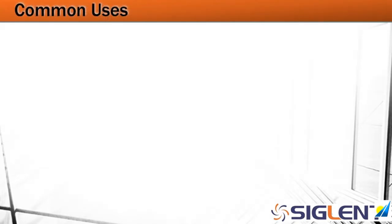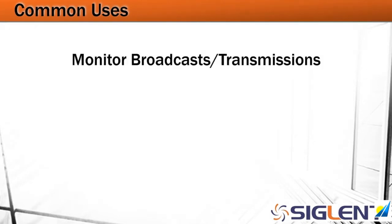Some common uses for a spectrum analyzer include monitoring broadcasts and transmissions — FM, AM, Wi-Fi, Bluetooth — anything that we're communicating wirelessly from one place to another. We may want to see what the amplitude is and over what frequency ranges we may be concerned with.